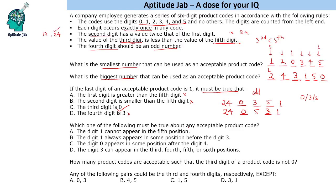Which one of the following must be true about any acceptable product code? As mentioned, we might get multiple codes — definitely in the double digits. So we will not make all codes. What we will do is negate the options. Since it says 'must be true,' we will try to prove the others false. If a statement can be proven false, it will not be our answer.